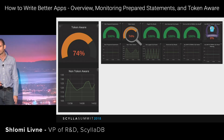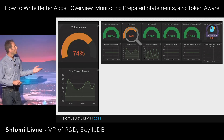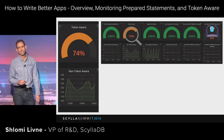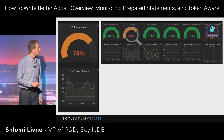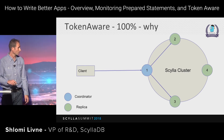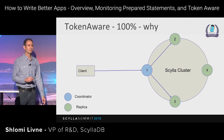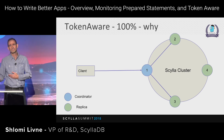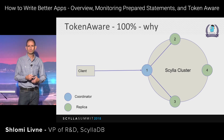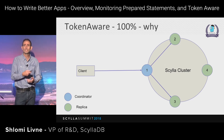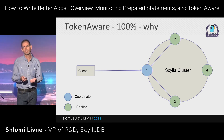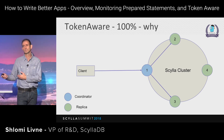74% token-aware means 26% of my requests are not hitting the correct coordinator. The client is sending a prepared statement but not to the right node — it's sending it to a coordinator that is not a replica. That node doesn't have the data and needs to relay the request to other nodes in the cluster. That's an additional hop and unnecessary processing.